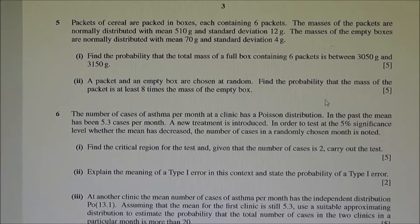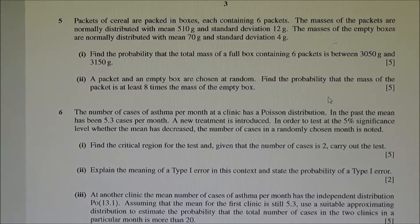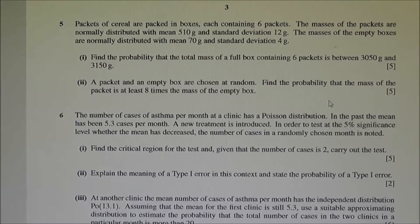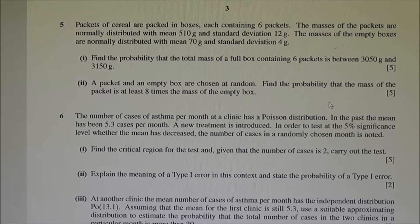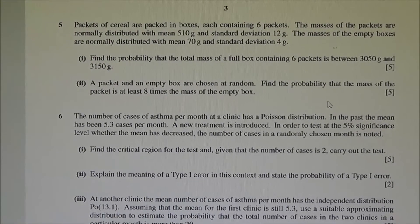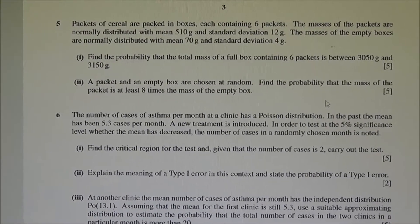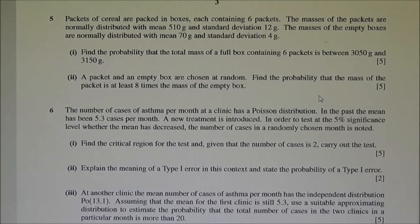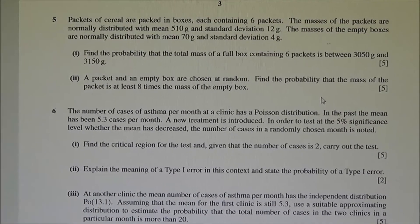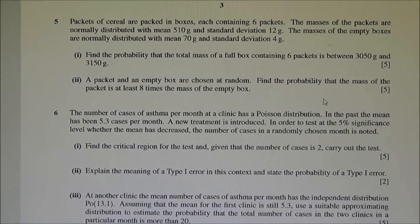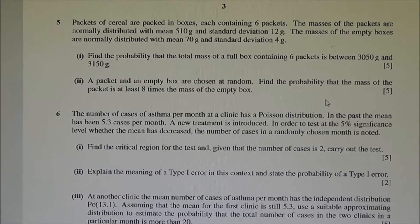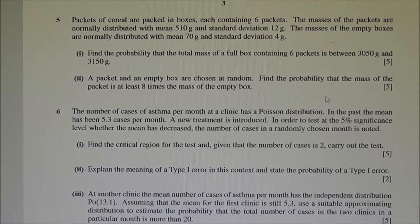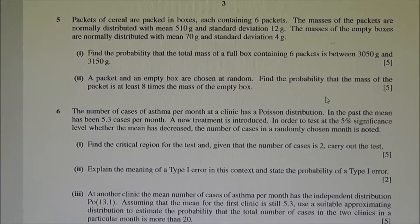First part: find the probability that the total mass of a full box containing 6 packets is between 3050 and 3150 grams. Second part: a packet and an empty box are chosen at random. Find the probability that the mass of the packet is at least 8 times the mass of the empty box.